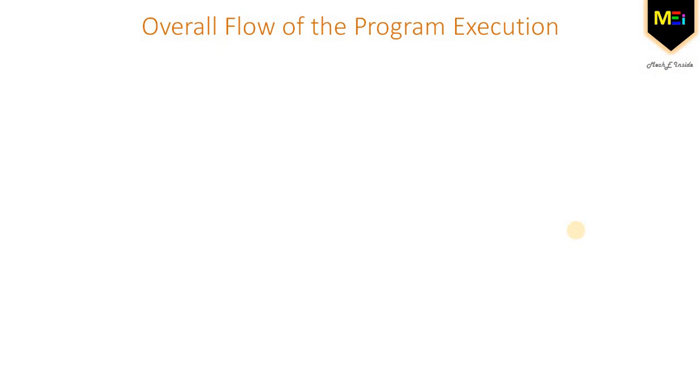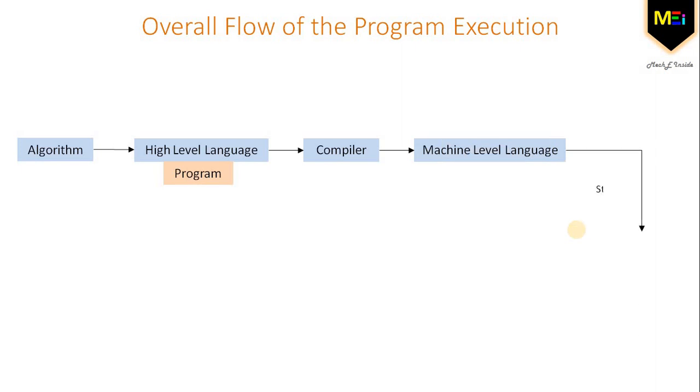Next is the overall flow of the program execution. How program executes in a computer. First is the algorithm. Then it is converted into the high level language or you can also say the program. Then there is a compiler which converts it into the machine level language and then that machine level language is stored in a memory. Then from memory, execution in the processing unit then shows the result.